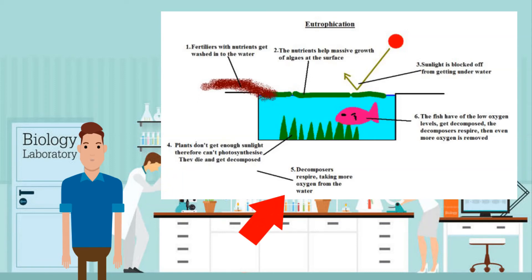5. Decomposer bacteria break down the dead plant matter. This removes oxygen from the water as they respire. 6. Now the oxygen level in the water is low. The fish will start to die, leading to more decomposing and the lowering of the water oxygen level to a lower level. This cycle continues, ultimately leaving a dead body of water.